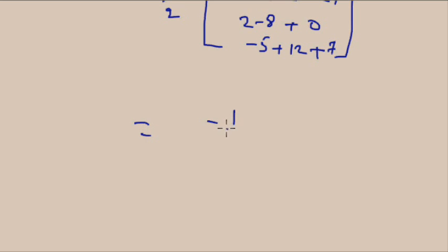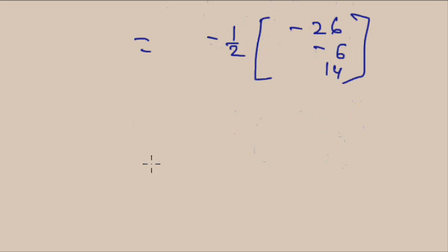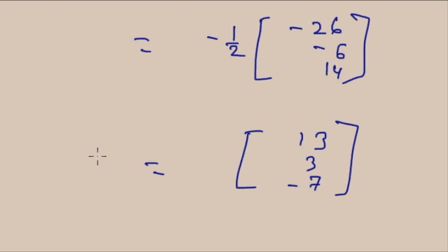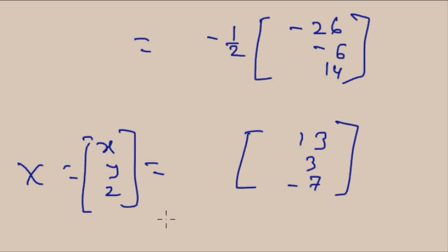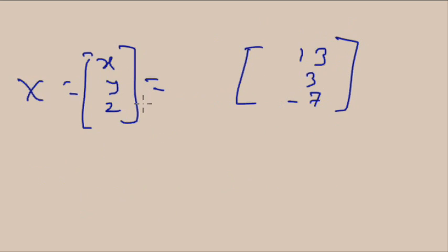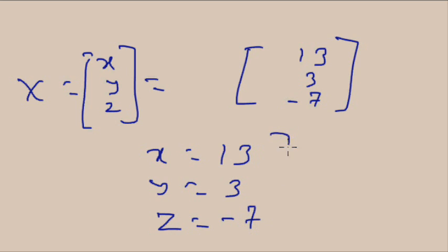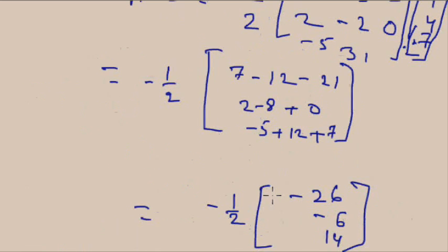So X = (−1/2) × [−26, −6, 14] = [13, 3, −7]. Since the two matrices are equal only when all elements are equal, x = 13, y = 3, and z = −7. This is the solution of the given system of equations.